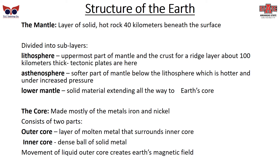The next layer is the mantle — a layer of solid, hot rock about 40 kilometers beneath the surface, divided into three sublayers. The lithosphere is the uppermost part of the mantle and the crust, forming a rigid layer about 100 kilometers thick where tectonic plates sit. The asthenosphere is the softer part of the mantle below the lithosphere, which is hotter and under increased pressure. The lower mantle is the solid material extending all the way to the Earth's core.